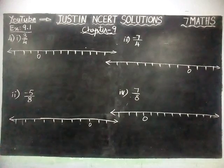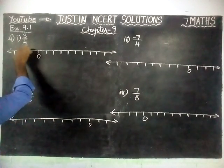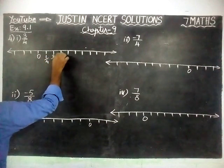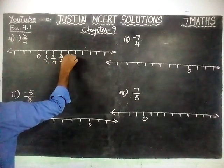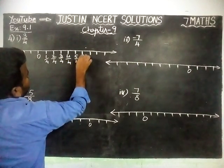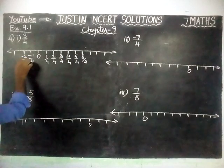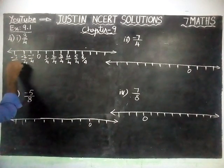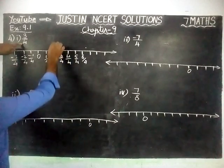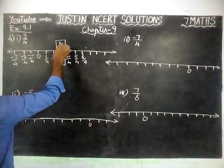First, we are going to draw a number line from 0, right hand side. Here we have denominator 4. So we will start from 1 by 4, 2 by 4, 3 by 4, 4 by 4, 5 by 4, 6 by 4, and so on. Left hand side: minus 1 by 4, minus 2 by 4, minus 3 by 4. Here, we have to find 3 by 4 only. So, 3 by 4 is located here.